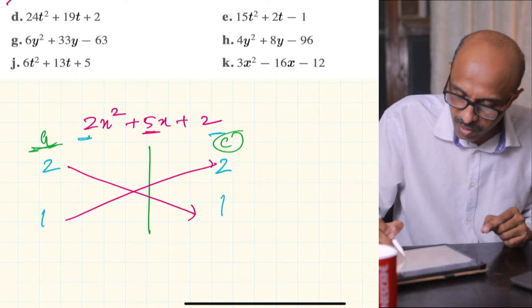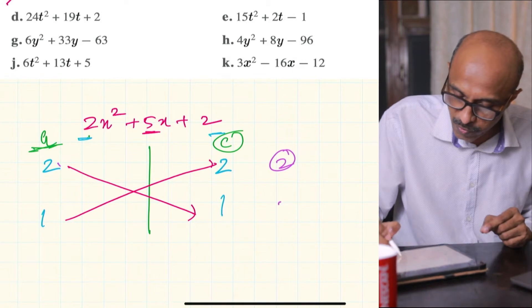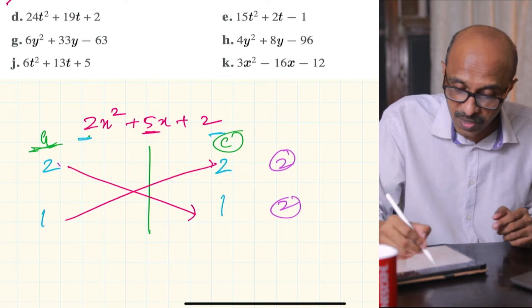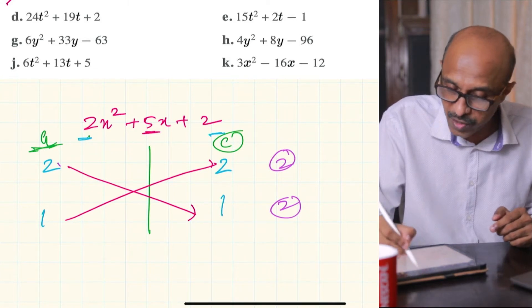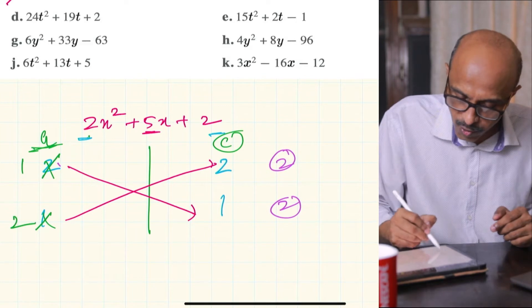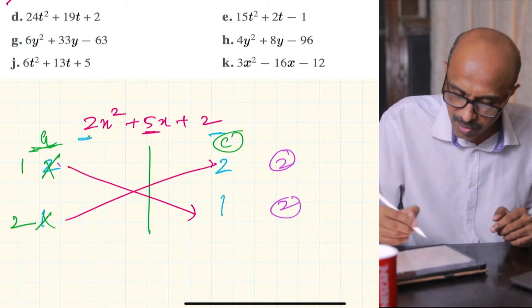So here we go, this is 2 times 1 which is 2, and this is 2 times 1 which is 2, and they do not add up to 5. 2 and 2 will not add up to 5 anyway. So these factors do not work out. Let's try another factor, so this is not going to work out.